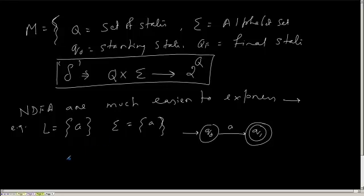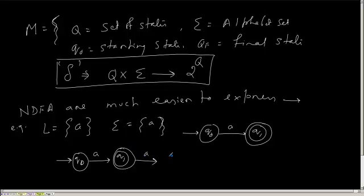But in DFA, what you have to do? I am in starting state Q0, I get A, I go to Q1, and Q1 is my final state. Now if any further A comes, I go to the reject state Q2. In Q2 I should not accept — this is the reject state. So this correctly defines that L will have a single string having a single symbol A in a DFA. But in NFA, it is just Q0 to Q1 with a single transition A.